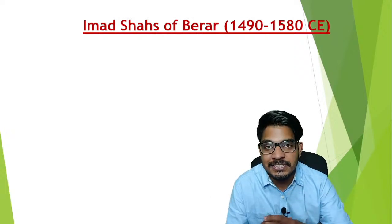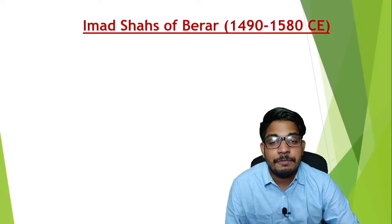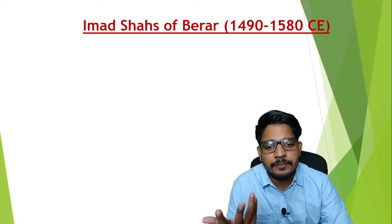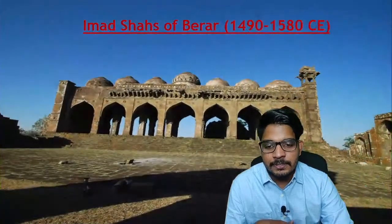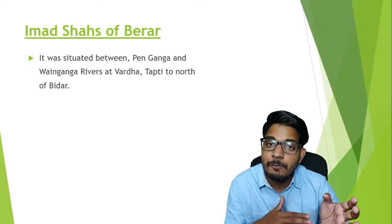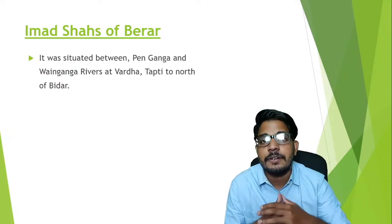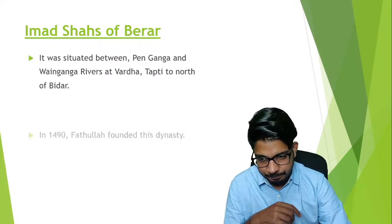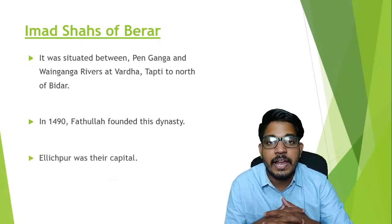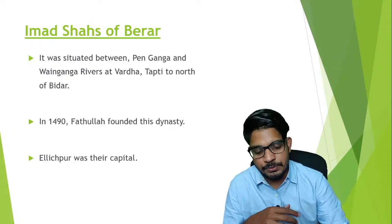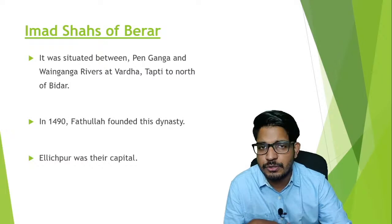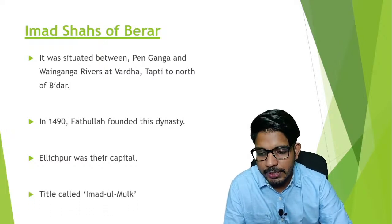Now we have reached the final principality — the Imad Shahs of Berar. They could only rule for about 90 years. They were situated between the Penganga and Wainganga rivers, and the northern border was the Tapti river. The dynasty was founded by Fatullah in 1490, and their capital was Ellichpur. Among all five principalities, the Imad Shahs of Berar were the smallest.